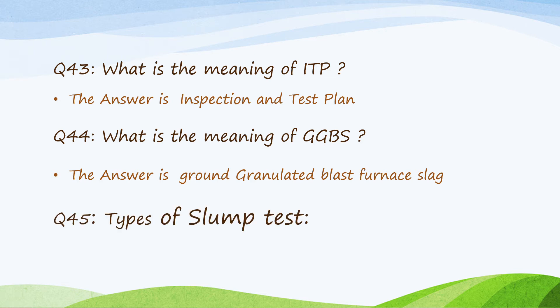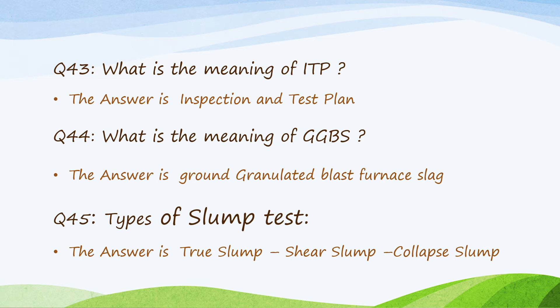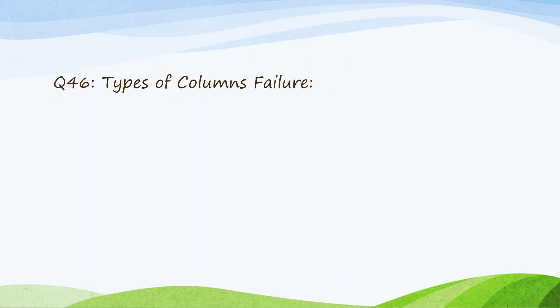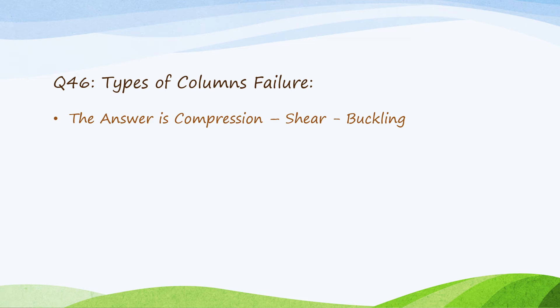Question 45: Types of slump test — true slump, shear slump, and collapse slump. Question 46: Types of column failure — compression failure, shear failure, and buckling failure.